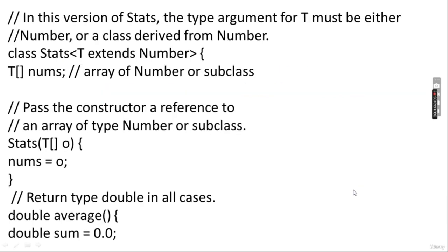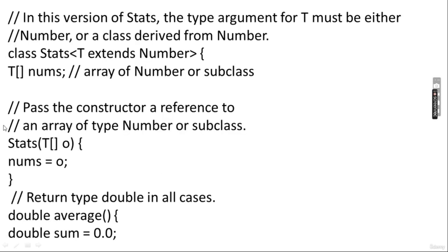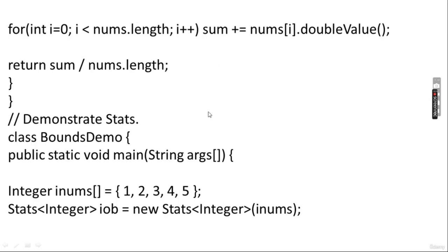This specifies that T can only be replaced by Number or its subclasses, such as Integer, Float, and Double — not String or Boolean. The superclass defines the inclusive upper limit. You can use this upper bound to fix the Stats class: declare Stats<T extends Number>, so T will only be replaced by numeric values. The average method then computes double sum = 0.0, adds nums[i].doubleValue() in a loop, and returns sum divided by nums.length.